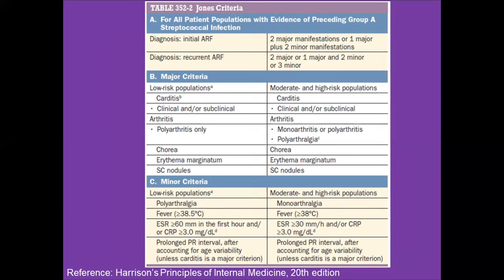There are differences in the minor criteria between low-risk and high-risk populations. In low-risk populations, minor criteria include polyarthralgia, fever more than 38.5°C, ESR more than 60 in the first hour, CRP more than 3 mg/dL, and prolonged PR interval. In moderate-to-high-risk populations, even monoarthralgia is included as a minor criterion, with fever more than 38°C, ESR more than 30, CRP more than 3, and prolonged PR interval.